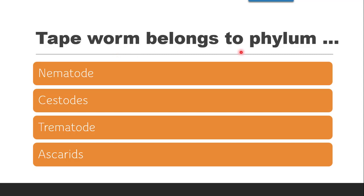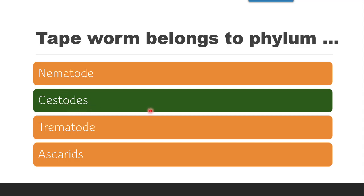Next question: Tapeworm belongs to phylum — whether it is nematode, cestode, or trematode. Nematode, cestode, and trematode are phylum names, and worms belong to these respective phylums. Nematode contains whipworm, roundworm, pinworm, etc. Cestode contains specifically tapeworm. Trematode contains flukes. So the correct answer is cestode — tapeworm belongs to cestode.